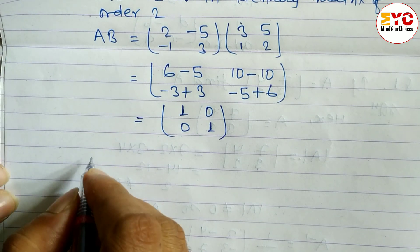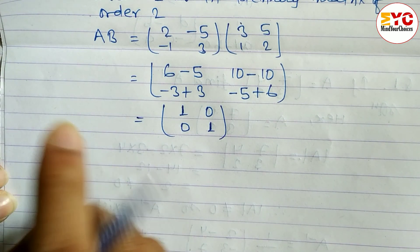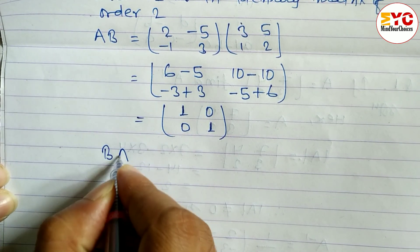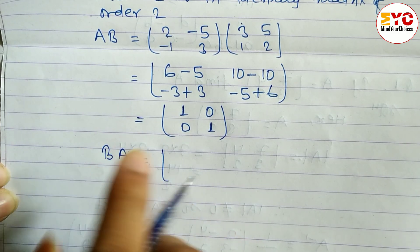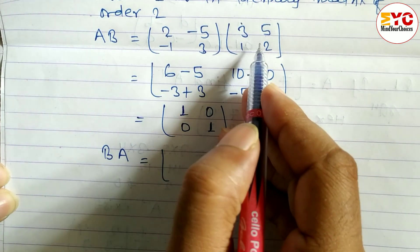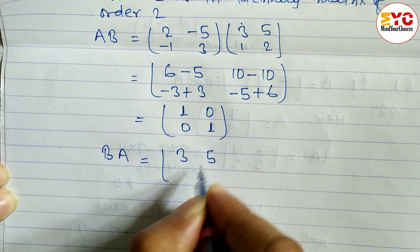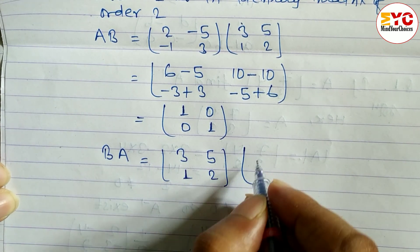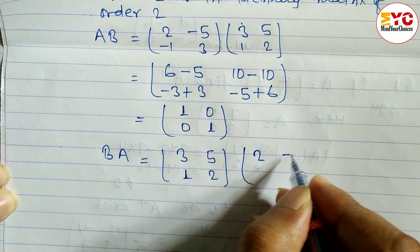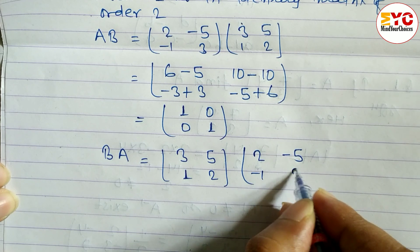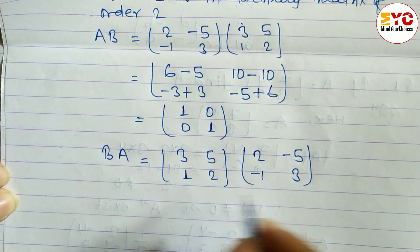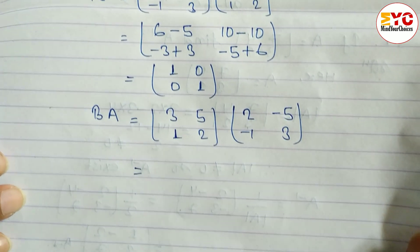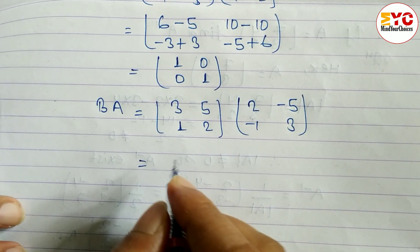This result is the identity matrix. But to confirm A and B are inverse of each other, we also have to find BA. Matrix B is [3, 5; 1, 2] and matrix A is [2, -5; -1, 3]. Let's multiply these two.